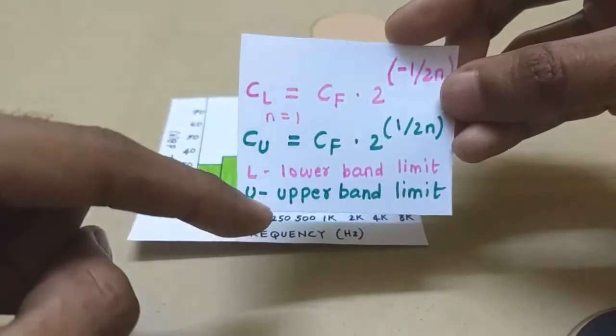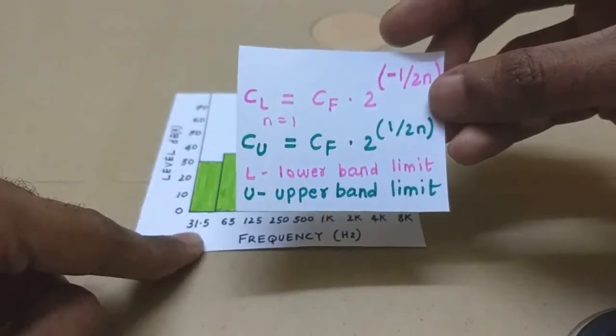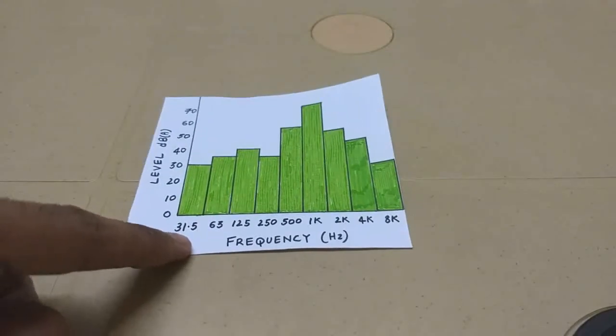And again n equals 1 because we are considering 1 by 1 octave band. You just plug in and you can calculate and determine the upper and the lower limits. Well I have calculated and it looks something like this.